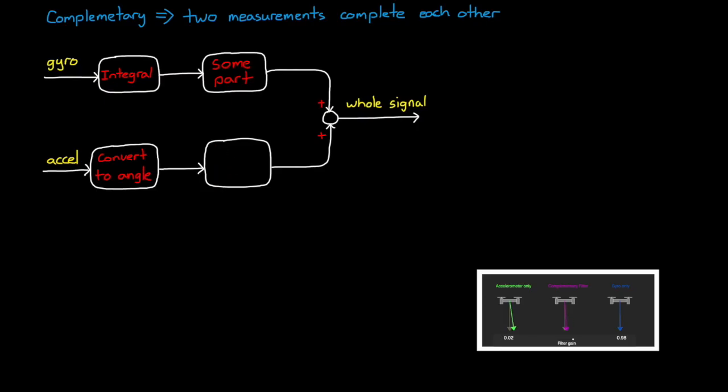Making these two parts complementary is easier than you might think. If we pass the accel measurement through a low pass filter, G of S, then the filter that we pass the gyro through is the high pass filter, 1 minus G of S. Since adding these two filters together equals 1, then they're complementary of each other.